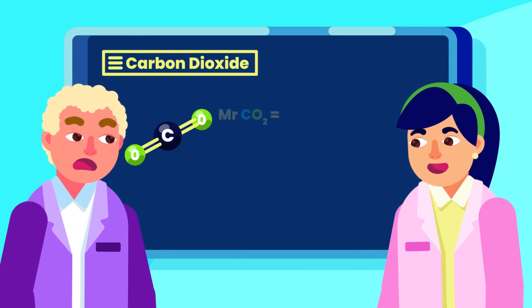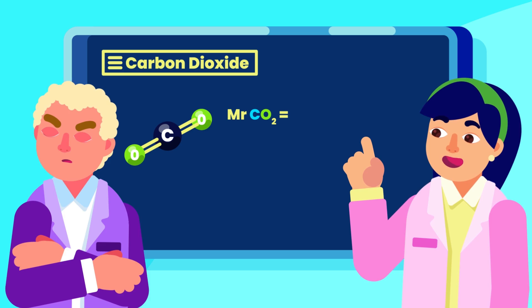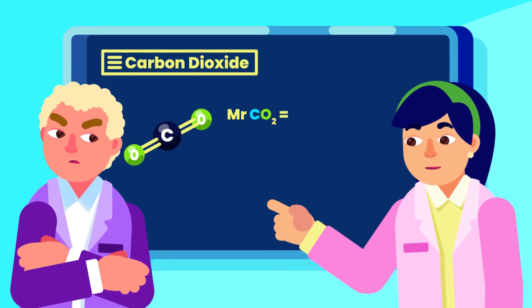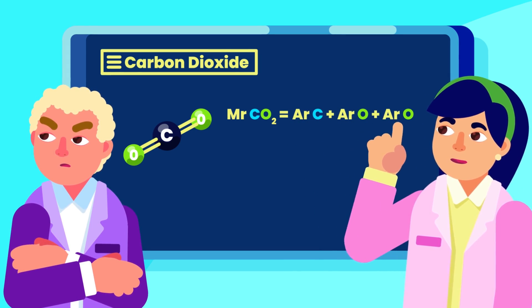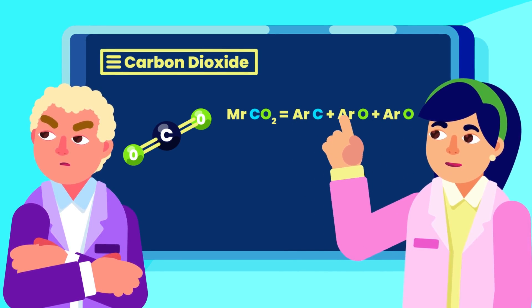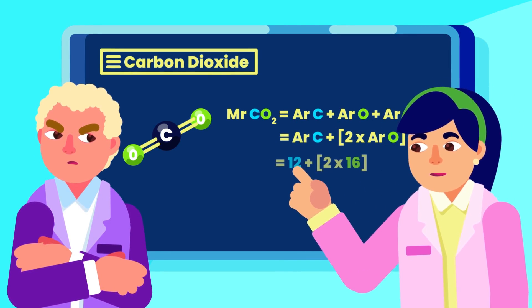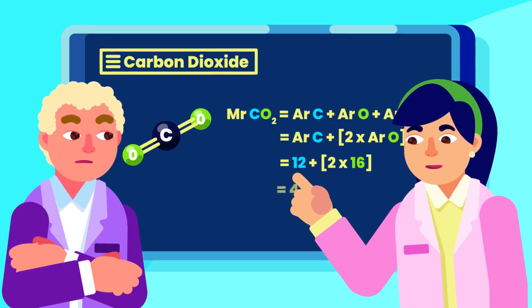For example, carbon dioxide, another component of the Earth's atmosphere, has a formula of CO2. So, to obtain the MR of the substance, we need to add the relative atomic mass, or AR of carbon, added by 2 times the AR of oxygen, which gives a result of 44.